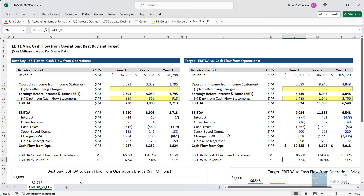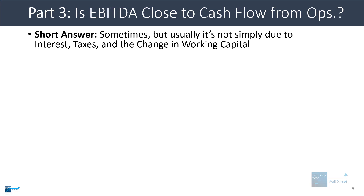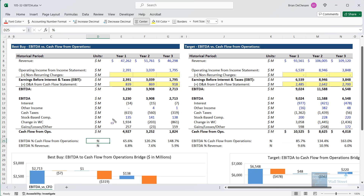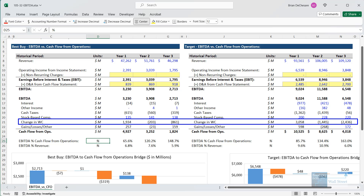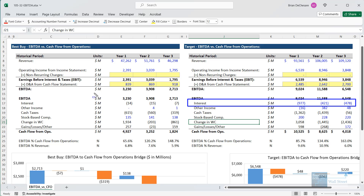Now let's talk about this issue of EBITDA and cash flow from operations. The short answer is that sometimes they are close, but usually they are not because interest makes a huge impact, taxes can be quite significant, and the change in working capital — especially for retailers like these — can also be quite significant. I have these two waterfall charts here. Best Buy has EBITDA of 2.7 billion in the most recent year, but cash flow from operations is only 1.8 billion. Target is at 6.5 billion in EBITDA, but cash flow from operations is only 4 billion. The change in working capital certainly makes a really big impact for both companies. The cash taxes both companies are paying also makes an impact, although more so for Target than Best Buy. And the interest expense also makes an impact — it's pretty minimal for Best Buy, but for Target it actually explains a lot of the difference between EBITDA and cash flow from operations.